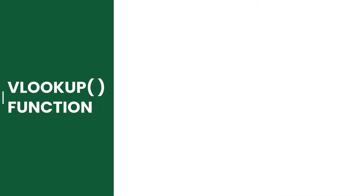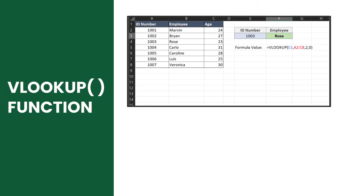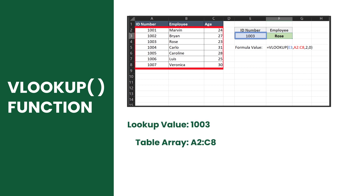The syntax of VLOOKUP consists of the lookup value, which is the value you want to look up, and the range or table array where the lookup value is located. Keep in mind that the lookup value should always be in the first column of your VLOOKUP range.